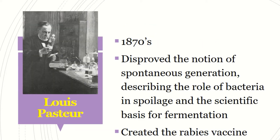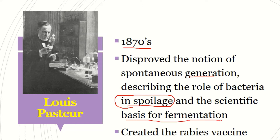Then Louis Pasteur, very well connected to milk and bacteria in the 1870s. He disproved the notion of spontaneous generation, describing the role of bacteria in spoilage. Spoilage is a form of fermentation, so he was able to give the scientific basis of fermentation. People were fermenting products but did not understand the scientific basis behind it — Pasteur was the person who explained that, and it was also connected to fermentation of milk.